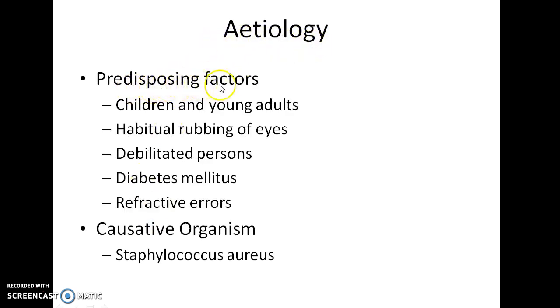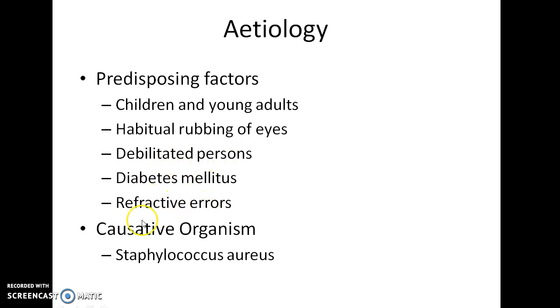What are the predisposing factors for developing hordeolum externum? Children and young adults are more prone to develop it. Other predisposing factors include habitual rubbing of eyes, debilitated persons, diabetes mellitus, and refractive errors.